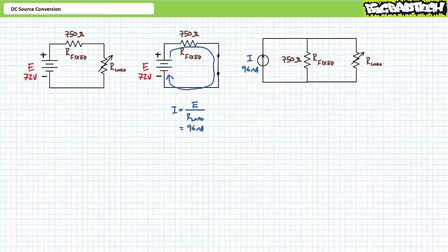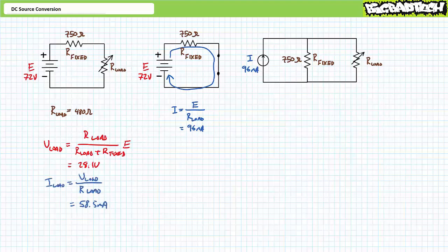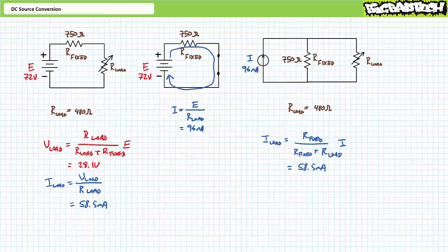If everything I've been saying is true, these two different source configurations will induce the same voltage drop across and current through for variable load resistances. Let's say we set the variable load resistor to 480 ohms. Our original configuration is a perfect setup for the DC voltage divider rule. An application of the DC voltage divider rule demonstrates the voltage across the variable load resistor set at 480 ohms is roughly 28.1 volts. A subsequent application of Ohm's law demonstrates current through the variable load resistor would be 58.5 milliamperes. Our modified configuration is a perfect setup for the DC current divider rule. An application of the DC current divider rule demonstrates current through the variable load resistor will be 58.5 milliamperes, and a subsequent application of Ohm's law demonstrates voltage across the variable load resistor will be 28.1 volts. Equivalency has indeed been maintained.